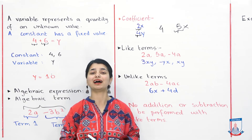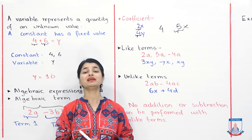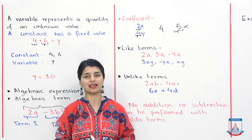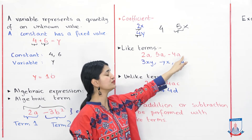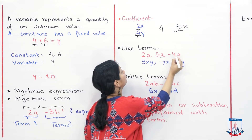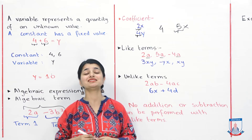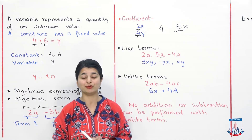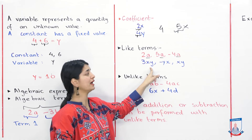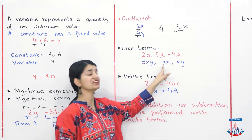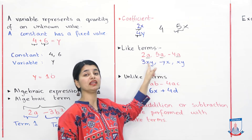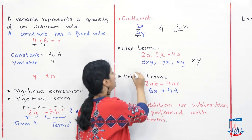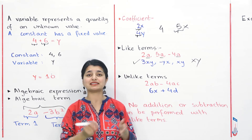Now we need to talk about like terms and unlike terms. What are like terms? Terms in which the variables are the same — even if the numerical values are different — are called like terms. For example, 2a, 5a, and minus 4a all have 'a', so all three are like terms and you can add or subtract them. Similarly, 3xy, minus yx, and xy all use the same variables x and y, so they are also like terms and you can add or subtract them.